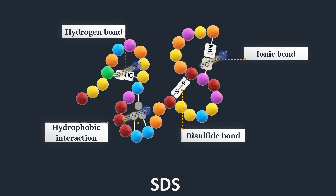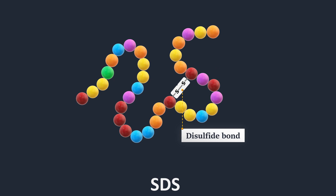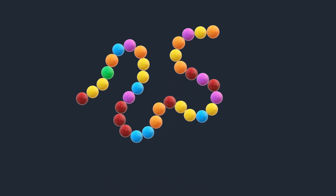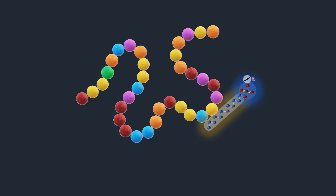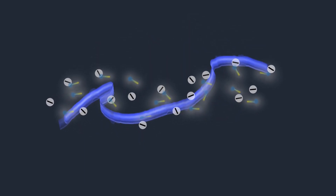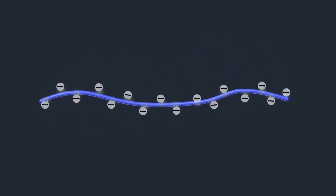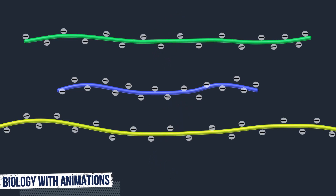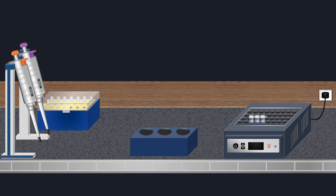SDS disturbs non-covalent forces including hydrogen bonding, hydrophobic, and ionic interactions, while the reducing agent beta-mercaptoethanol is used to cleave the disulfide bonds. Also, SDS binds fairly uniformly to the protein, and the intrinsic charges of the protein become negligible when compared to the negative charges contributed by SDS. This treatment brings the folded proteins down to linear molecules with a net negative charge. Therefore, these proteins can be separated in a polyacrylamide gel based on their molecular weight.